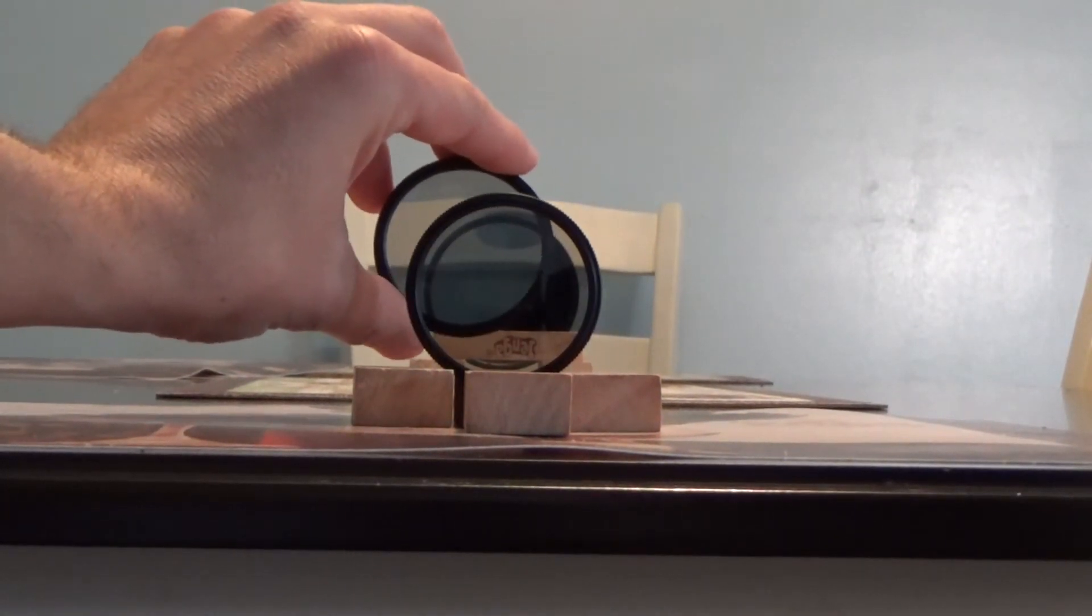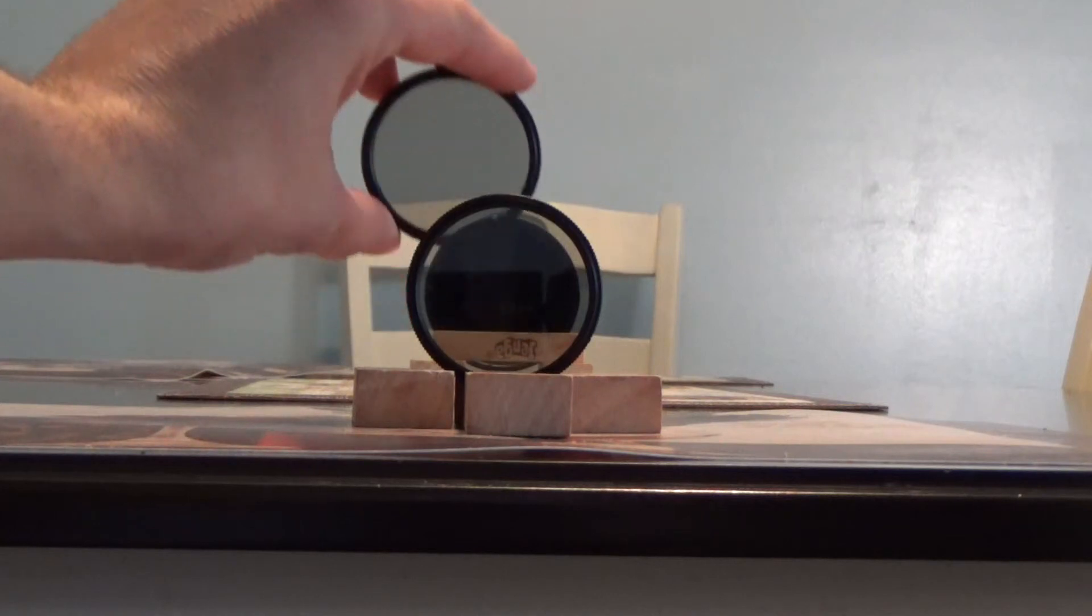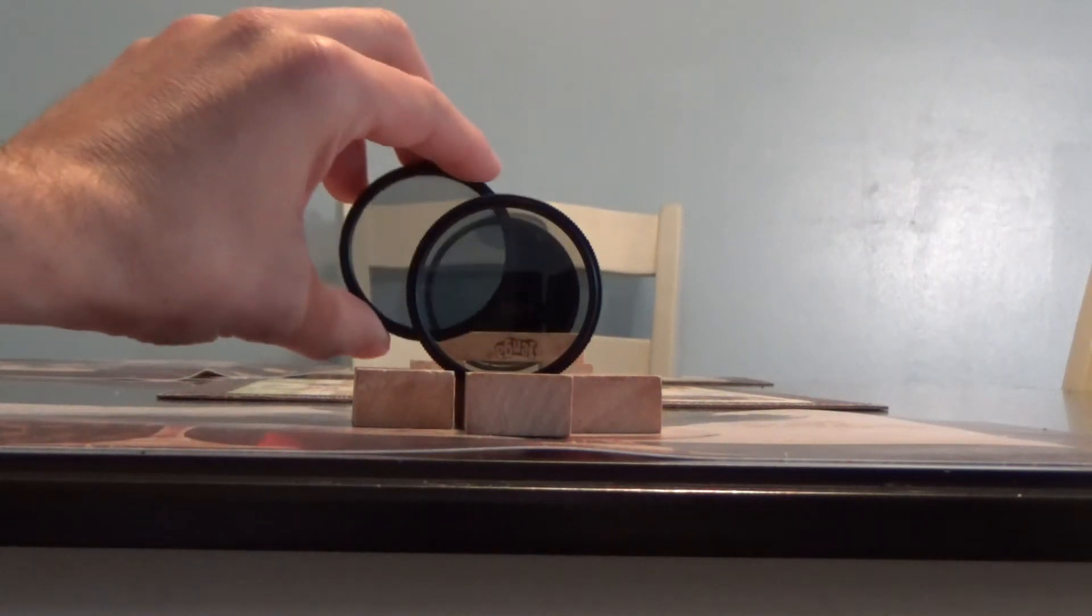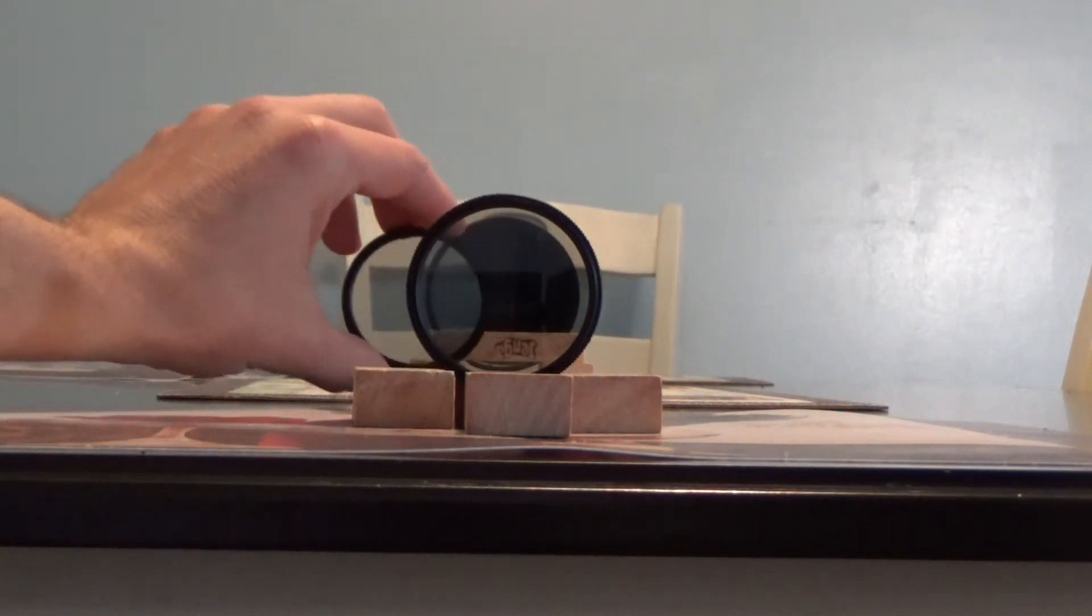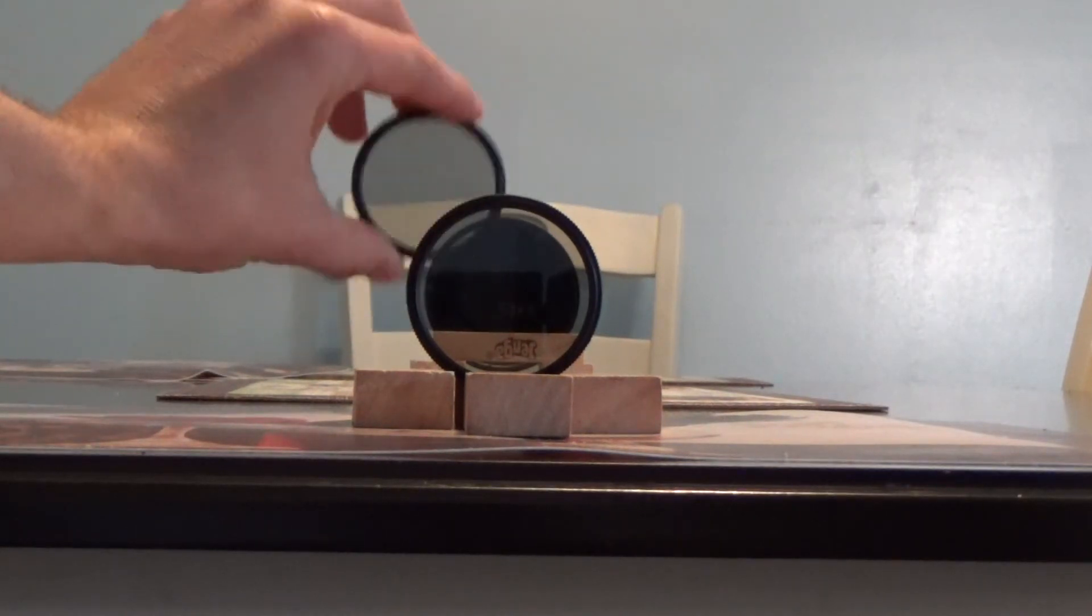...light gets through! See, you can see right through it. It's because all the polarizers are aligned relative to each other at 45 degrees, so light gets through.